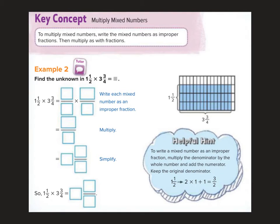Key concept: to multiply mixed numbers, first we need to write the mixed numbers as improper fractions, and then we just multiply. So we've got two steps - step one, improper fraction; step two, multiply.